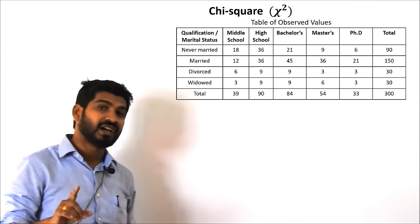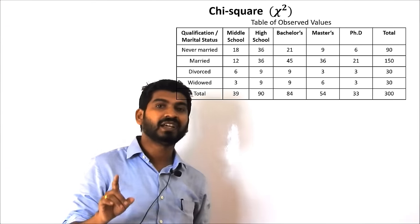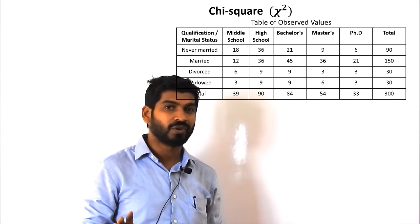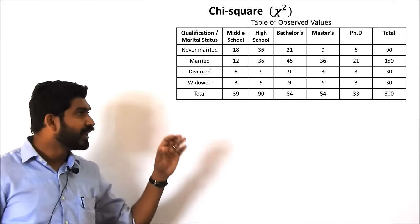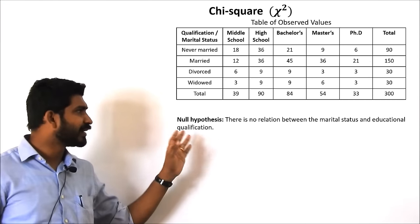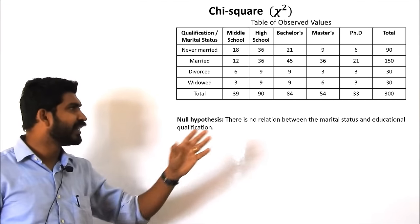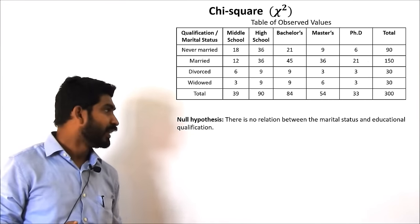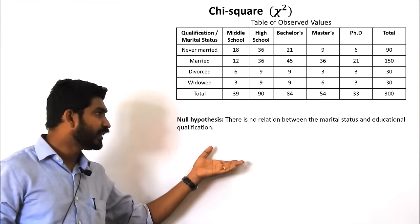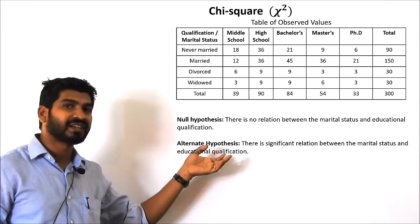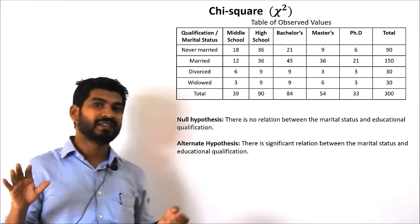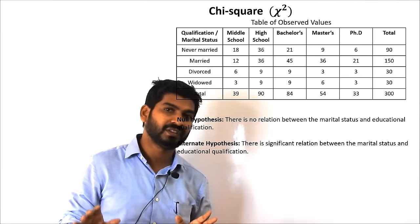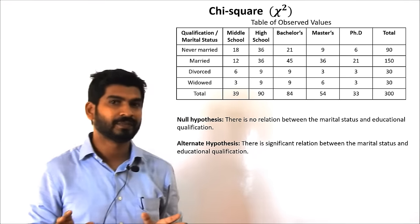We start with defining our null hypothesis and the alternate hypothesis. Our null hypothesis states that there is no correlation between the two variables, and the alternate hypothesis states that there is a significant relation between the two variables.